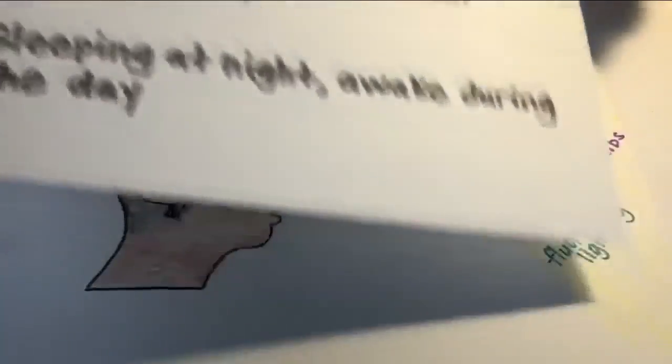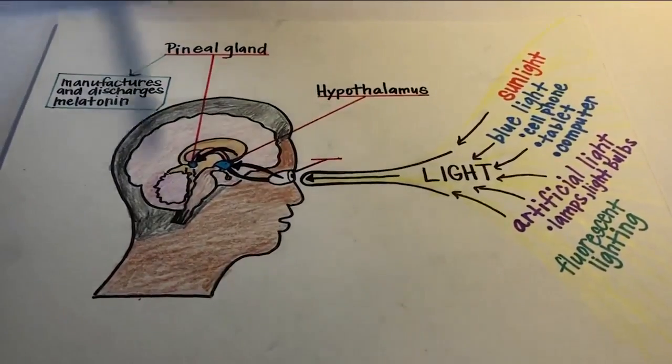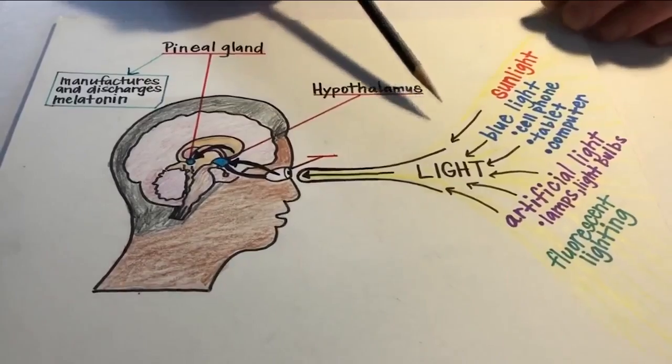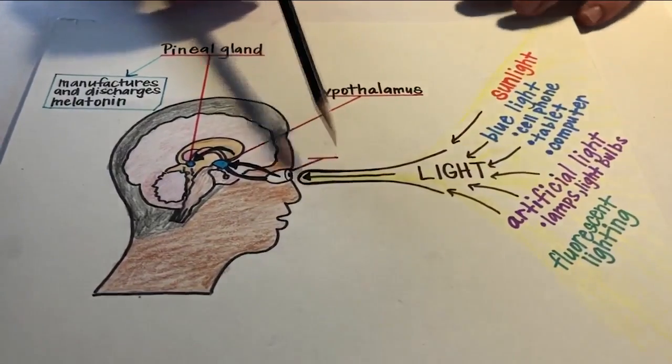But we all don't sleep like babies, so we need help. Why don't we all sleep like babies? It's because of light. And if you don't turn the lights off eventually throughout the day, you really don't get into the circadian rhythm.